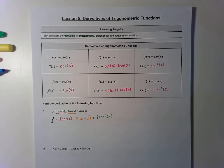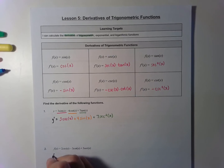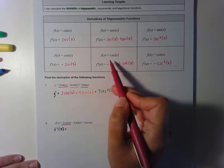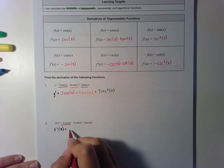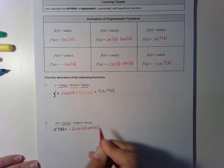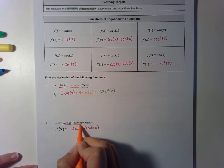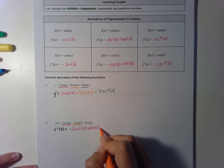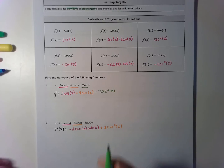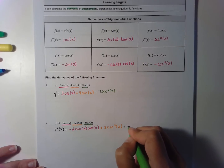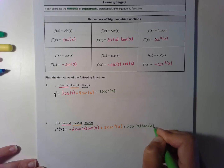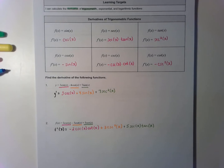For problem number two, f prime of x equals the derivative of two cosecant. Cosecant is a changer because it starts with C, so it becomes negative two cosecant of x cotangent of x. The next term is negative three cotangent, also a changer, so it becomes positive three cosecant squared of x. And the derivative of five secant is plus five secant of x tangent of x.